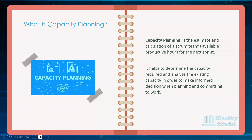What is capacity planning? Capacity planning is the estimate and calculation of a Scrum team's available productive hours for the next sprint. You're in one sprint, you need to plan for the next sprint. It helps you determine the capacity required and helps you when committing to work that needs to be done during that sprint.